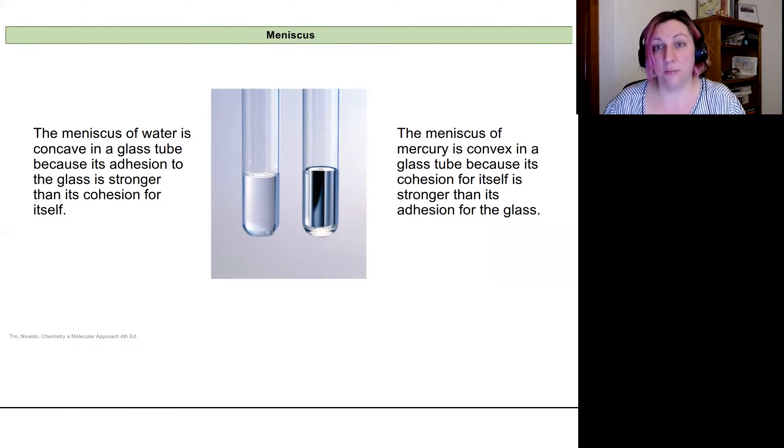Now, the opposite is true for mercury. The cohesive forces of mercury are extremely strong, especially compared to their adhesive forces to glass, right? And so those cohesive forces will be stronger.